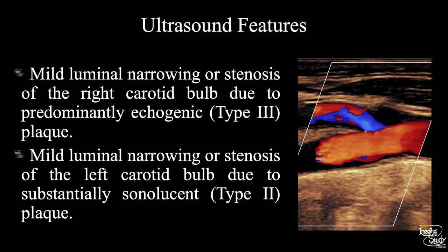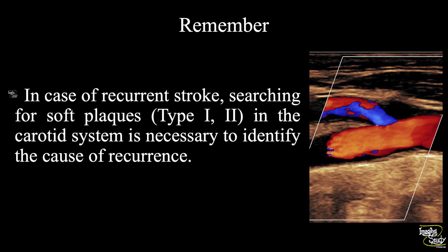In summary, mild luminal narrowing or stenosis of the right carotid bulb due to a predominantly echogenic — type 3 — plaque is noted. Also, there is mild luminal narrowing or stenosis of the left carotid bulb due to a substantially sonolucent — type 2 — plaque. Another take-home message: in case of recurrent stroke, searching for soft plaques — type 1 or type 2 — in the carotid system is necessary to identify the cause of recurrence.